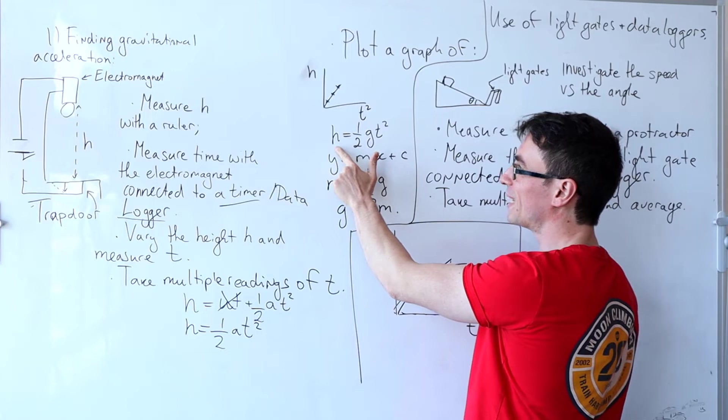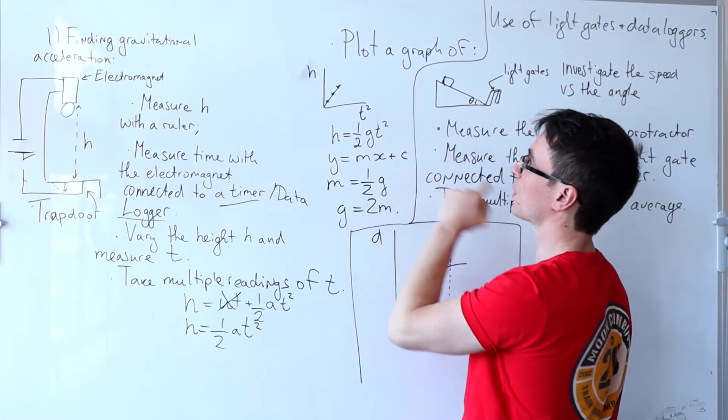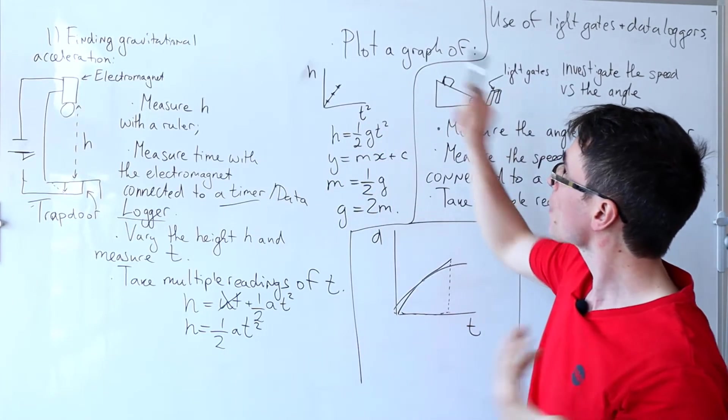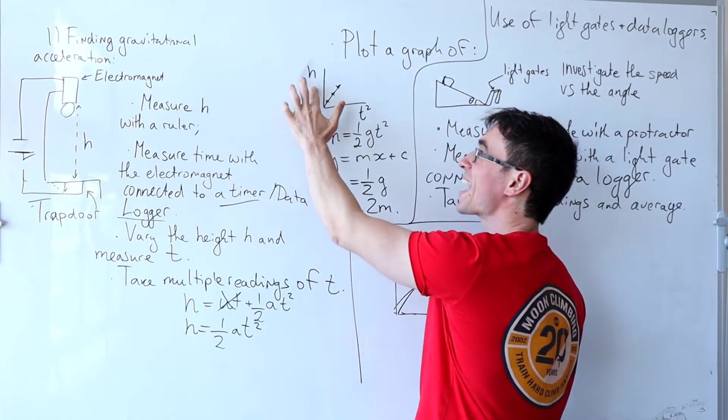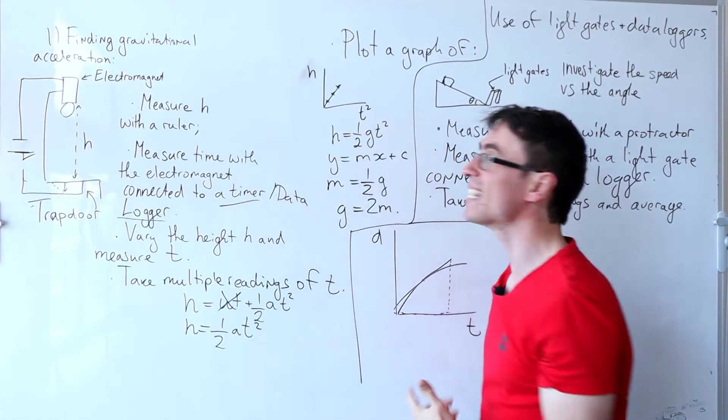This leaves us with this equation that H is equal to a half GT squared and we can directly plot a graph of H against T squared.